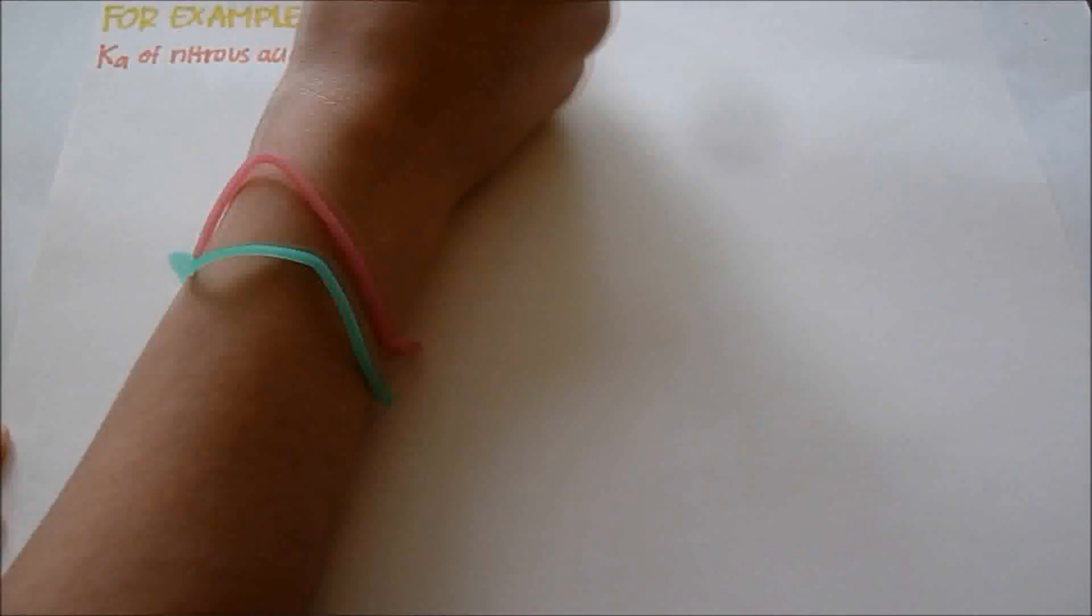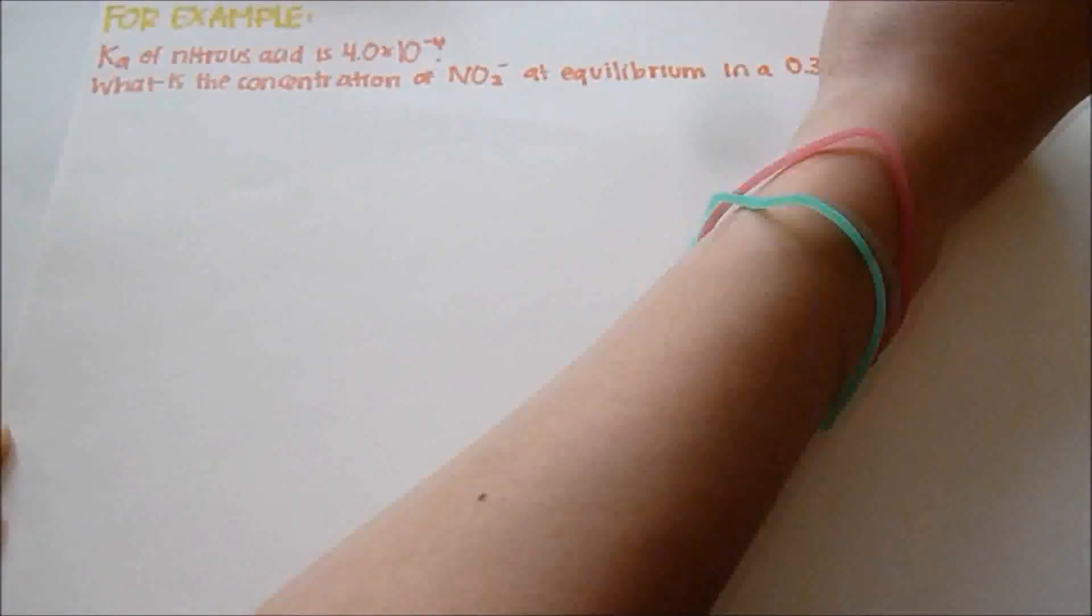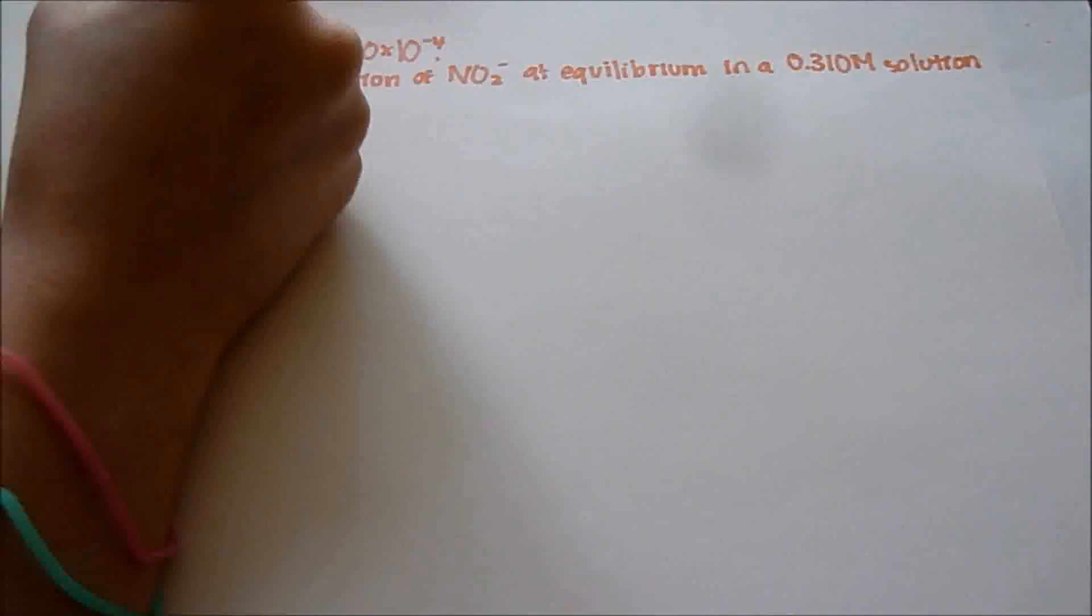So let's say we're given this problem where the Ka of nitrous acid is 4 times 10 to the negative 4th. And we're asked to find the concentration of the nitrite ion at equilibrium in a 0.310 molarity solution of nitrous acid.